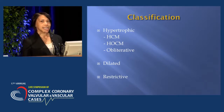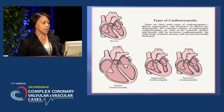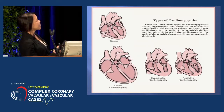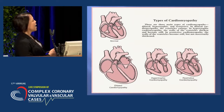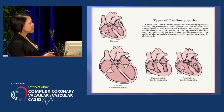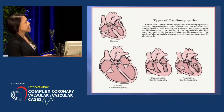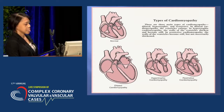There's also dilated and restrictive. This diagram shows what a normal heart looks like. For dilated, the ventricles are enlarged. For hypertrophic, the septum is enlarged and the ventricles are stiffened. And with restrictive, the ventricles are restricted but not necessarily enlarged.